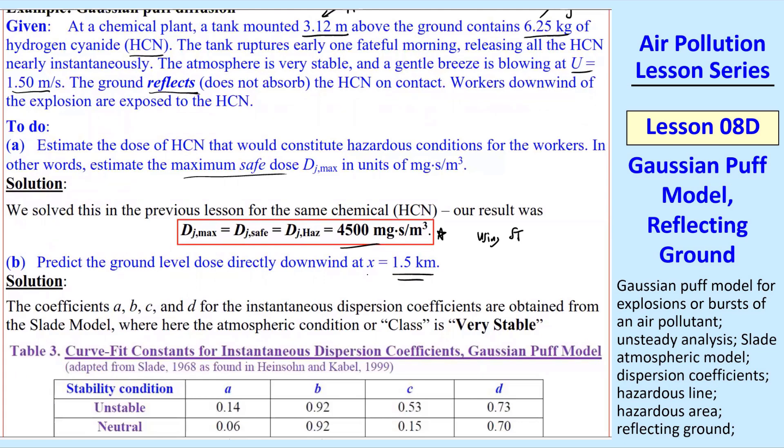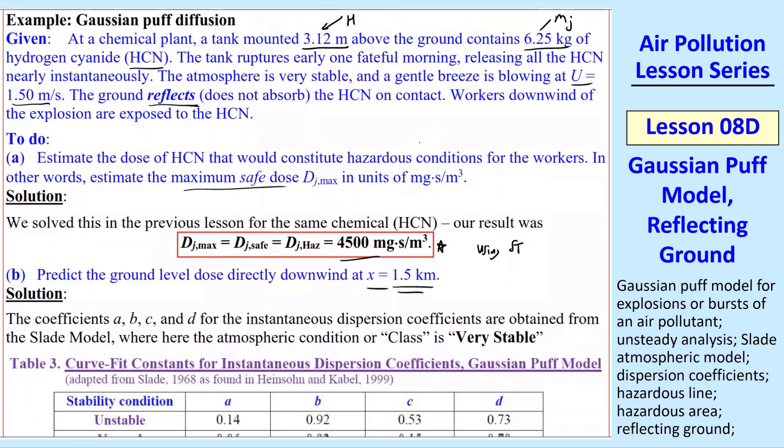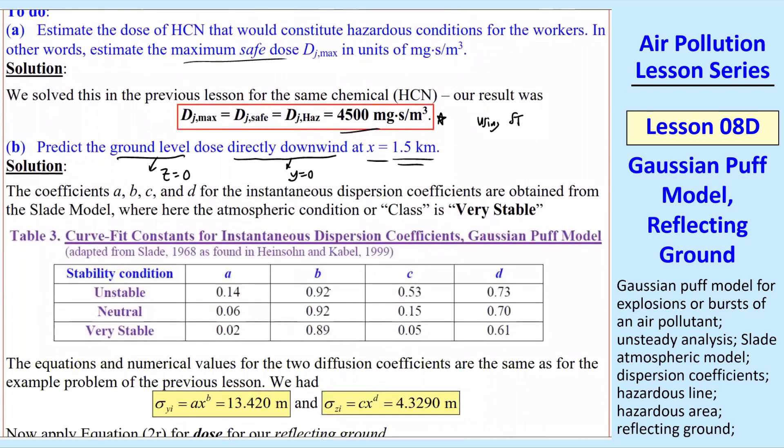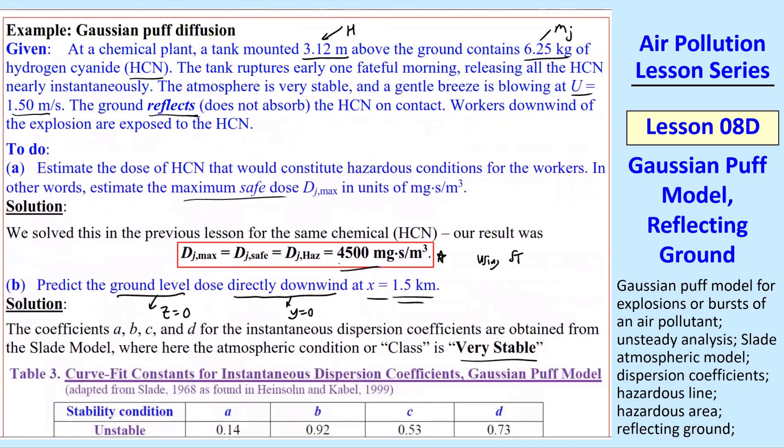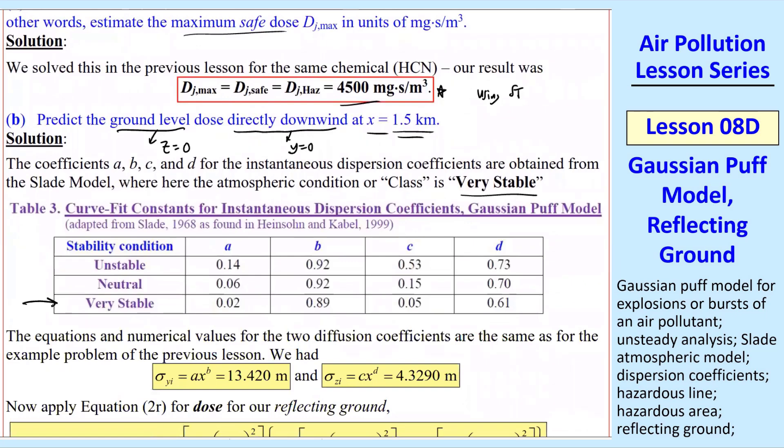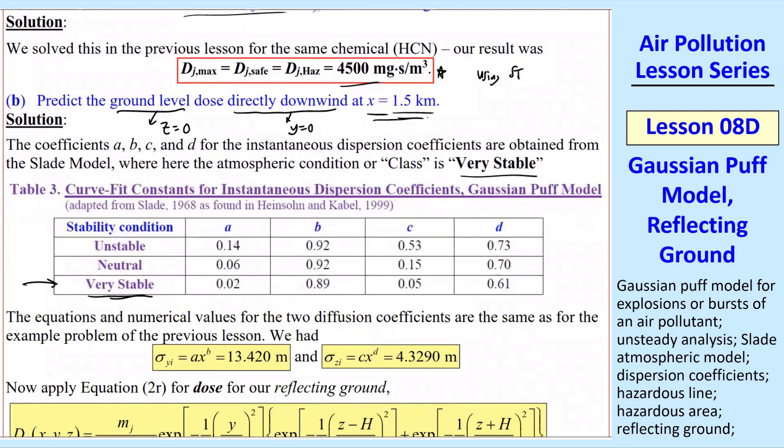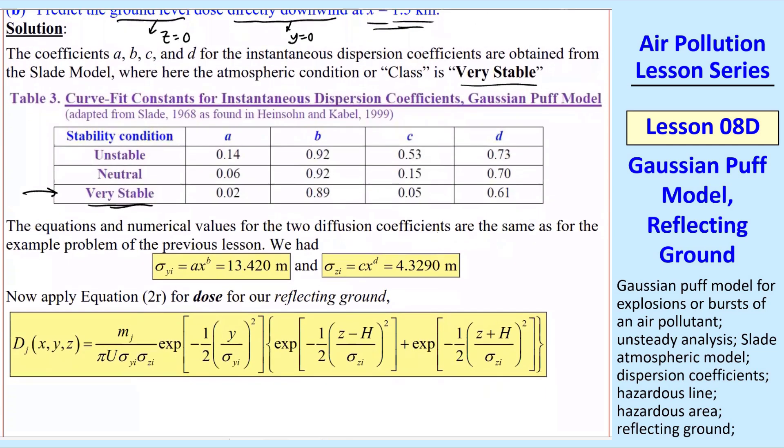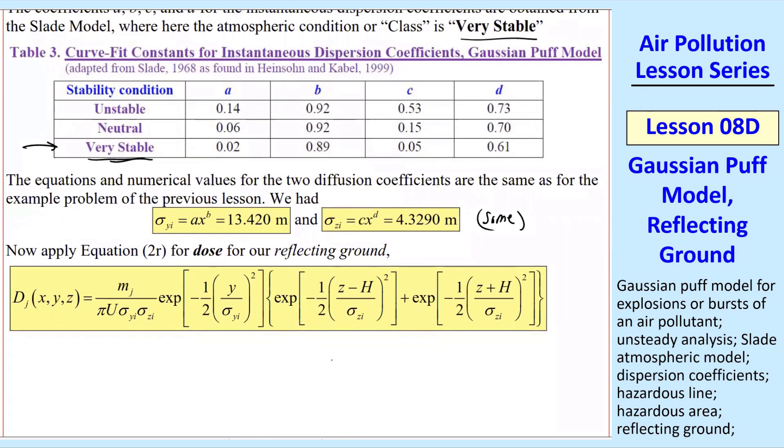Part B, we want to look at the same X as before, but these are different variables, so we'll get different answers. Ground dose level means Z equals 0. Directly downwind tells us Y equals 0, right on the center line. We use the Slade model with very stable atmosphere. We have the same X and atmospheric class as in the previous example. Therefore, at this X, we have the same sigmas as before. So far, everything's the same.